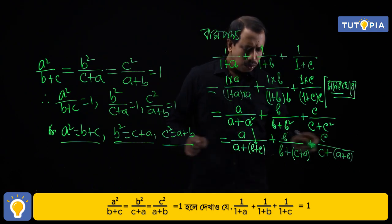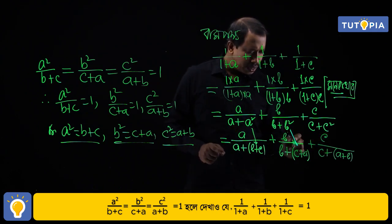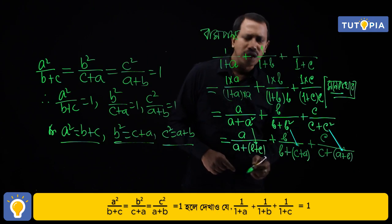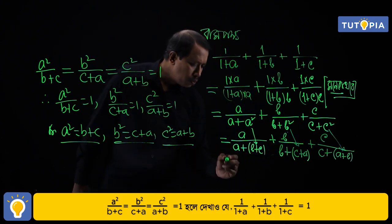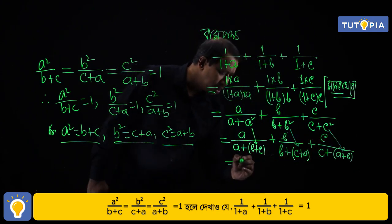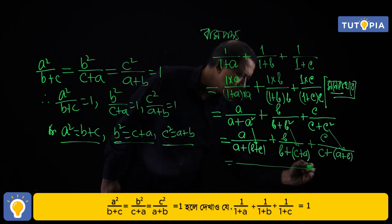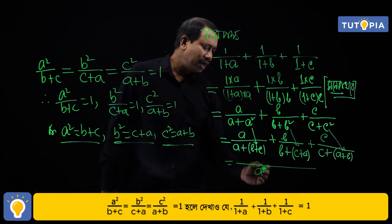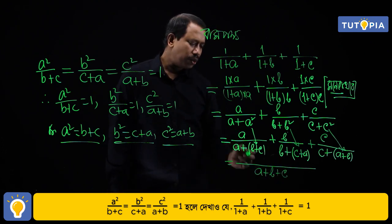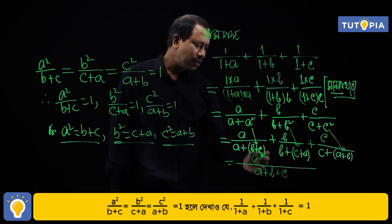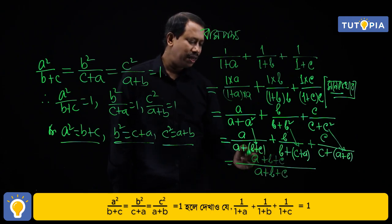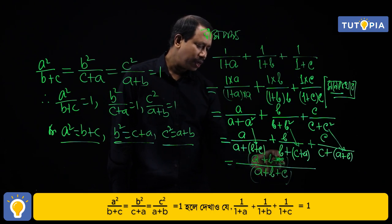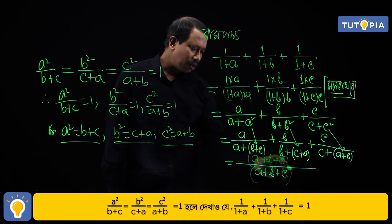We have to do the same thing for each term. By substituting the given conditions throughout, the result follows directly.